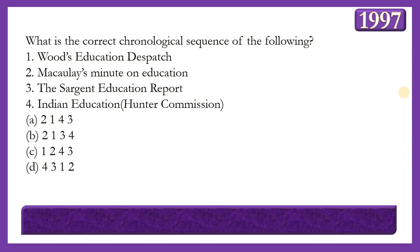Next question: What is the correct chronological sequence of the following education-related events: Wood's Education Dispatch, Macaulay's Minute on Education, Sargent Education Report, or Hunter's Commission? The answer is option A — 2, 1, 4, 3 — meaning Macaulay's Minute on Education (1835), Wood's Education Dispatch (1854), Hunter's Commission (1882), and Sargent's Plan on Education (1944).